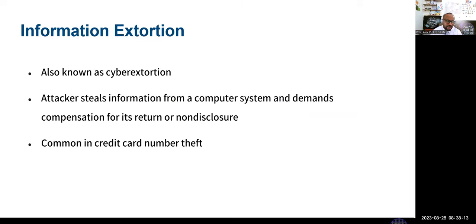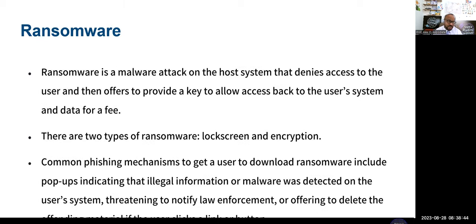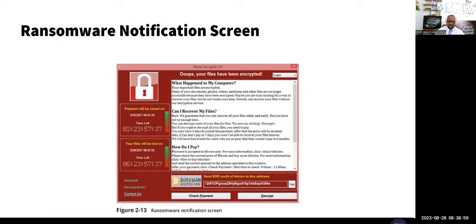Information extortion — also known as cyber extortion — involves stealing information from a computer system and demanding compensation for its return or non-disclosure. Current ransomware puts malware on your system, blocks it, and asks you to pay via cryptocurrency. They also threaten that if you don't pay, they will disclose your information on the dark web so people will have access to your confidential information. The ransomware denies you entry via lock screen encryption — basically 'give me money and I'll give you the decryption code to decrypt and access your files.'